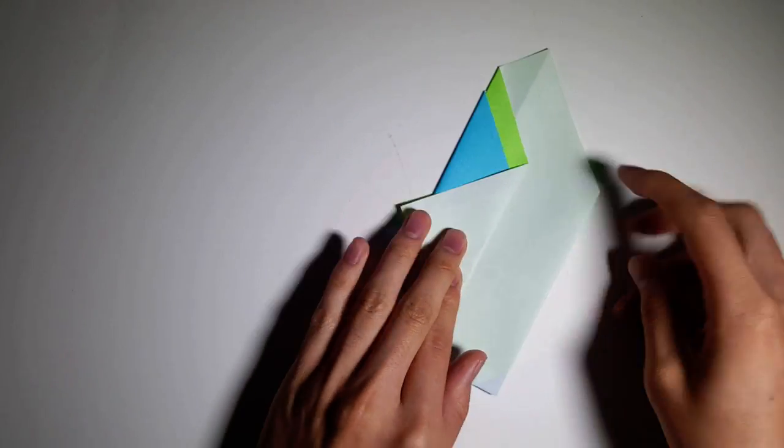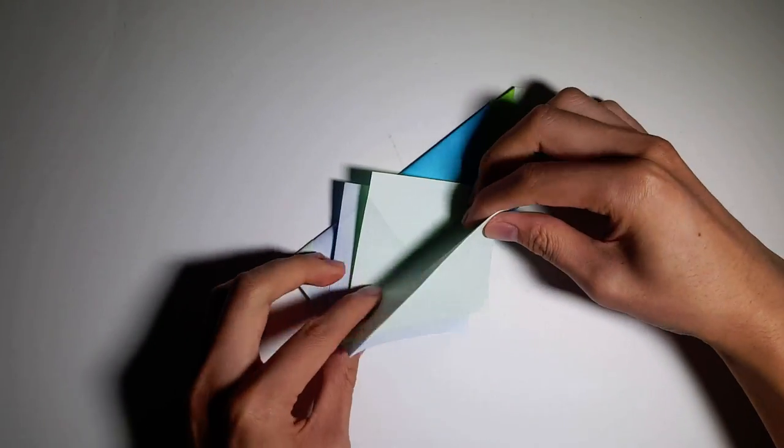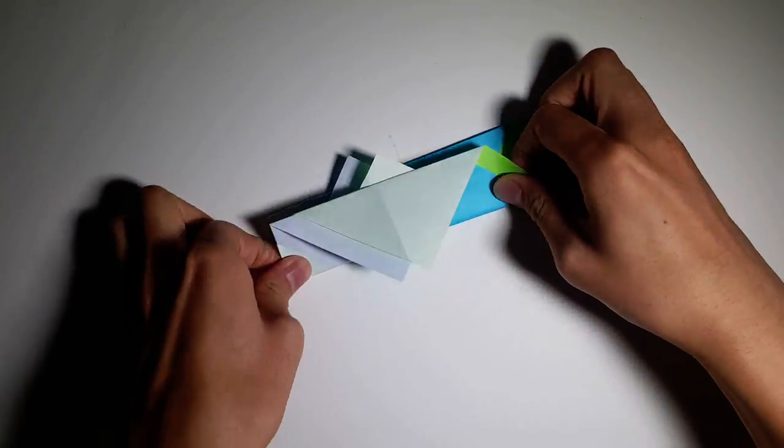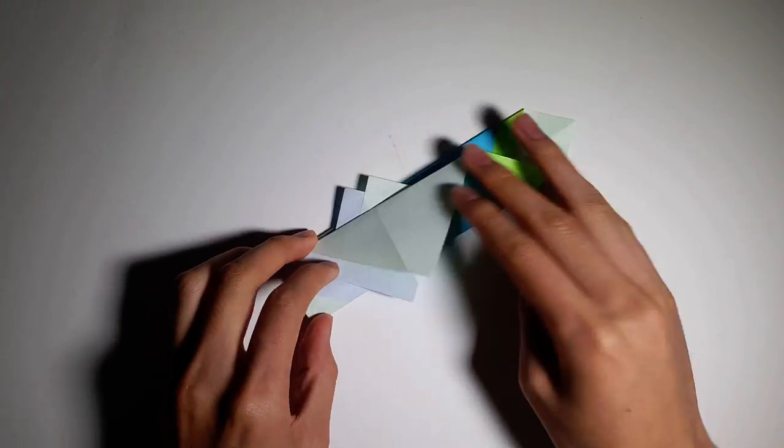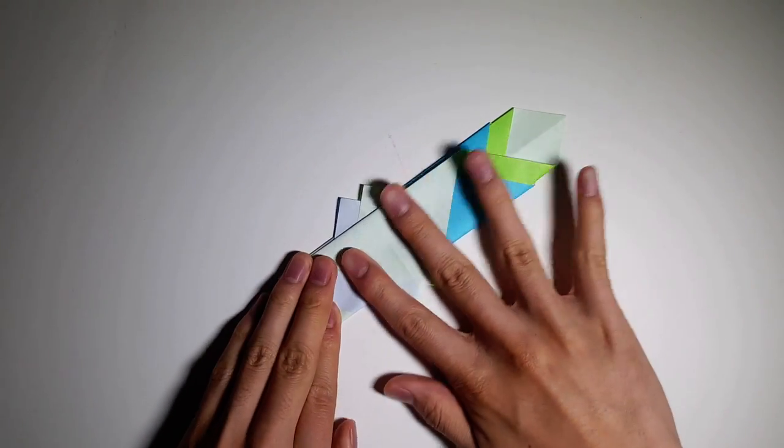Now we do the same for the other side. Fold it over. It should pretty much just fold over next to it, and then just fold it.